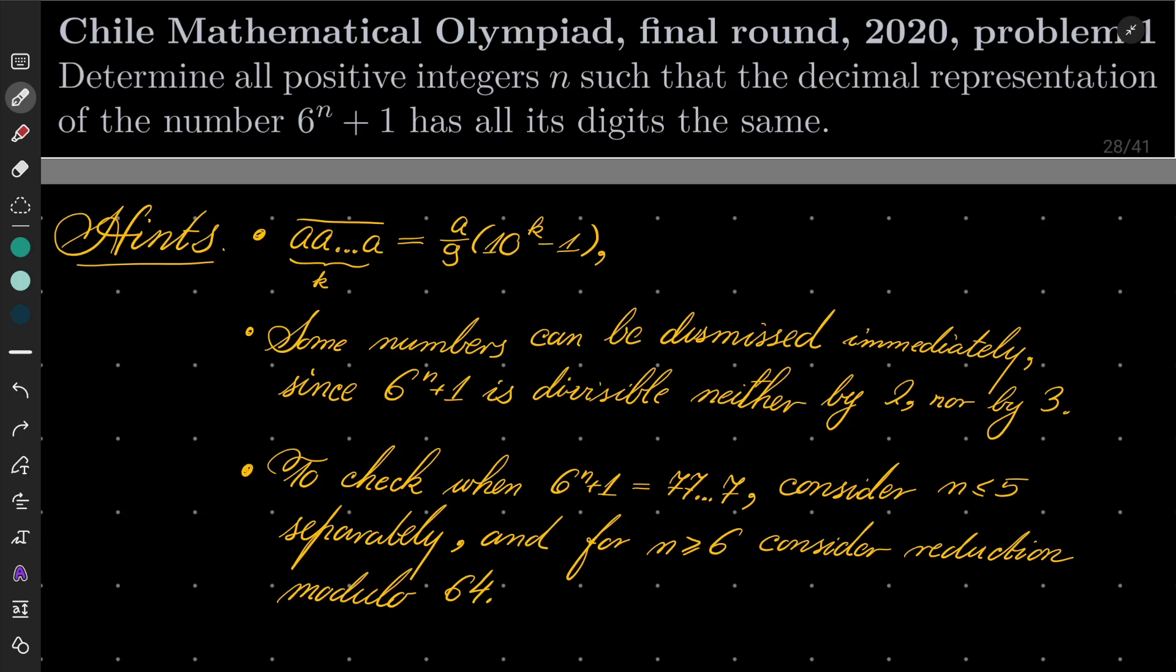Then some numbers can be dismissed immediately, namely notice that 6 to the power of n plus 1 is divisible neither by 2 nor by 3, so some cases are dismissed immediately.